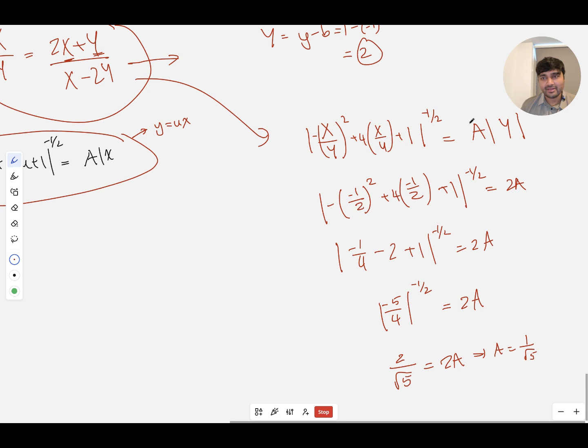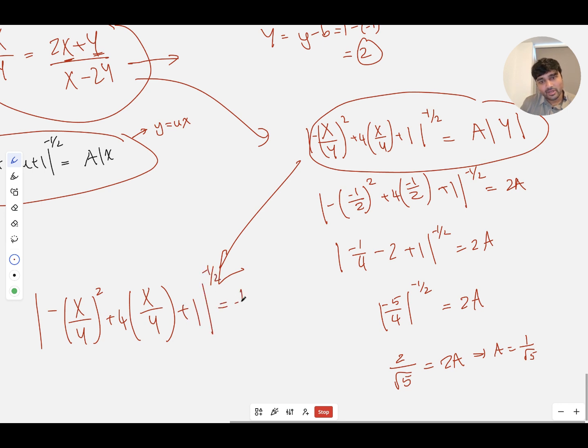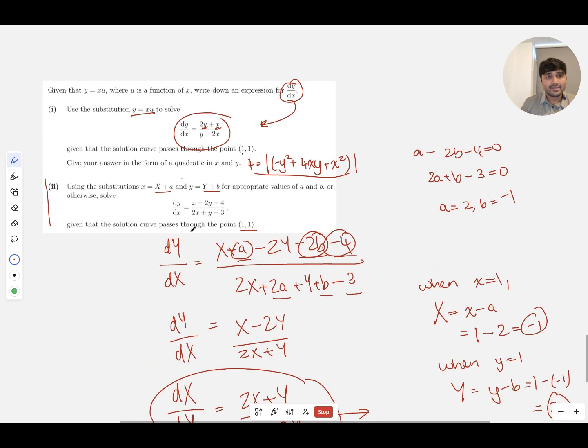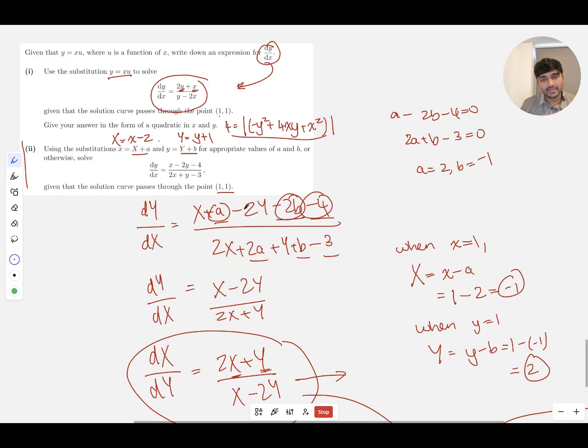So a is 1/√5. If we now just plug that back into here, it's very messy just because I'm trying to keep everything on screen. It needs to be, obviously, when you're writing this out in an exam, make sure it's laid out a lot more neatly than I'm presenting it to be. This is going to be (-X/Y)² + 4X/Y + 1 to the power of -½ equals (1/√5) times the absolute value of Y. And now all I need to do is substitute in what X is. So capital X is x - a, so x - 2. And capital Y is y + 1.